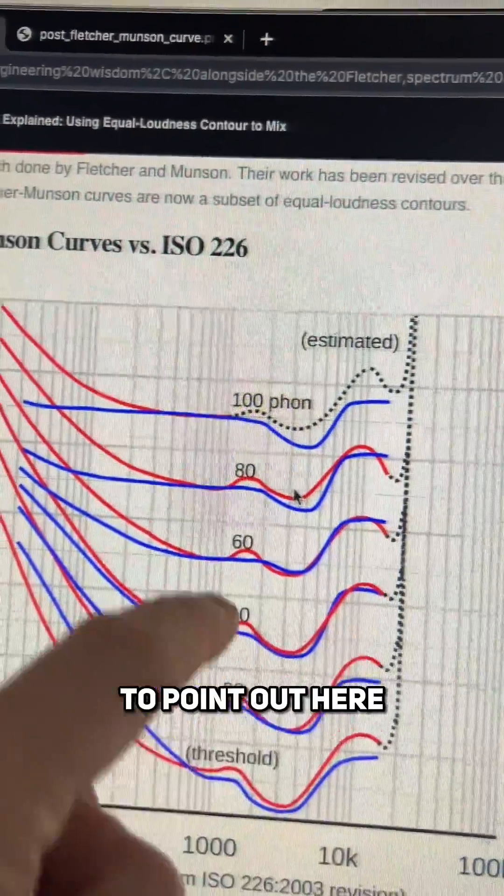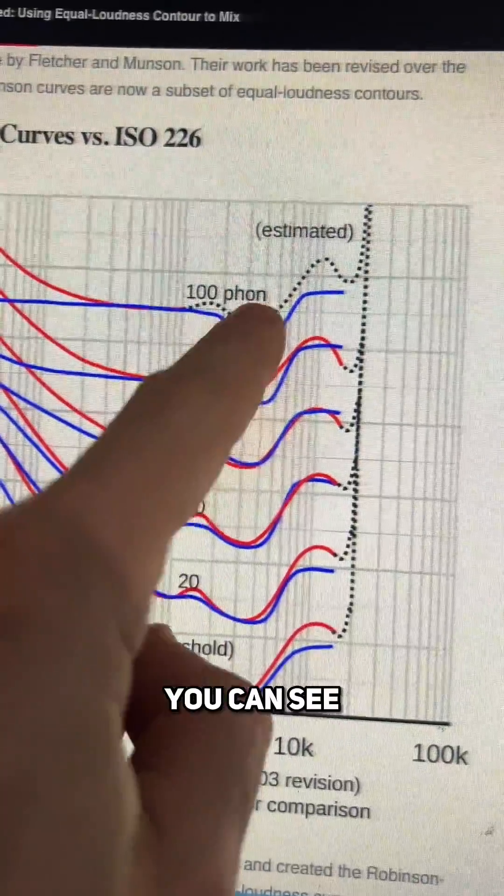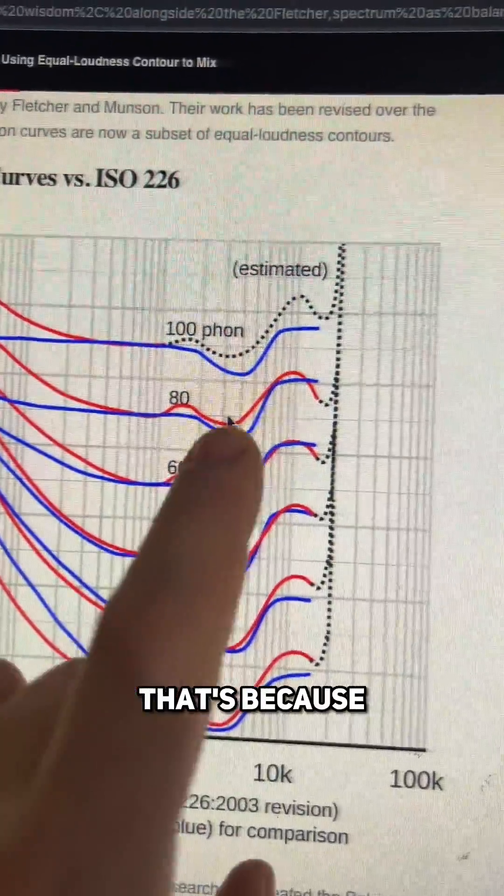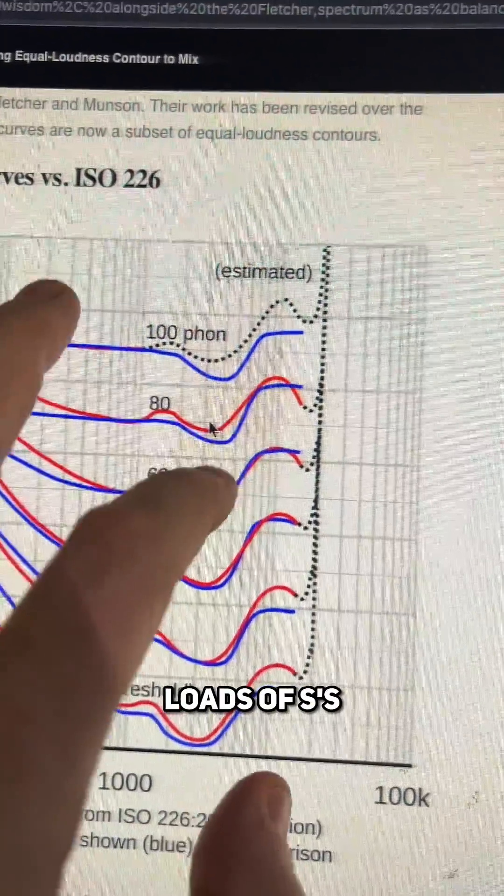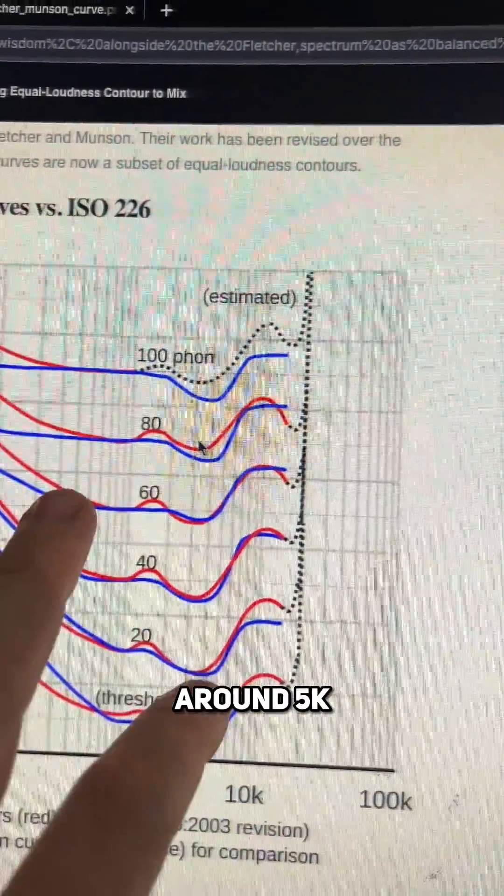Something also to point out here is that if you are around 5k, you can see there's a lower drop. That's because your ears are super sensitive, which is why you hear loads of S's and harsh stuff going on around 5k.